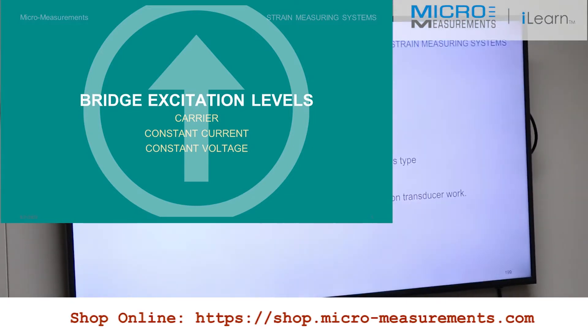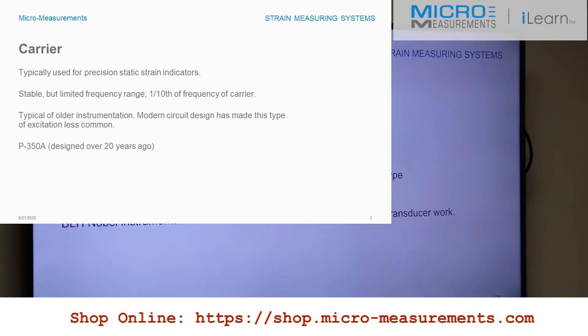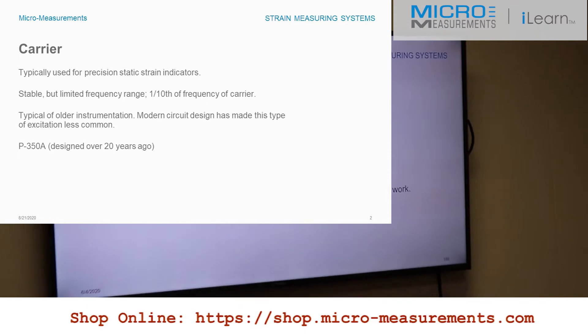Carrier excitation, for those of you who are older and might remember it, is similar to the transition from AM radio — lots of static, lots of noise — to FM. Frequency modulated, nice smooth music, good frequency response, everything was wonderful. That used the same principles as carrier excitation. You take your excitation, put it as a frequency, then ride your signal on top of it. You modulate it out, you demodulate it, and it can give you very, very stable and very, very accurate measurements.